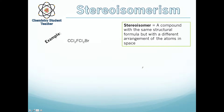So let's look at stereoisomerism. Stereoisomers are compounds with the same structural formula but with a different arrangement of atoms in three-dimensional space. So if we take this example, CCl₂FI₂Br — I'm just going to make that clear — and if we just do the displayed formula, it looks something like this: Cl₂FCI₂Br.